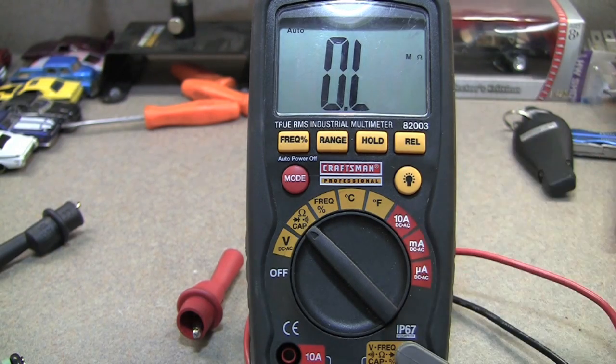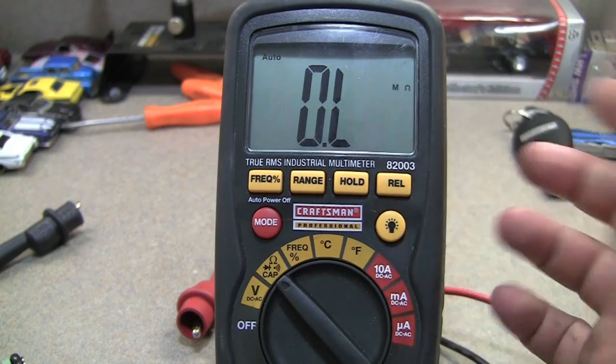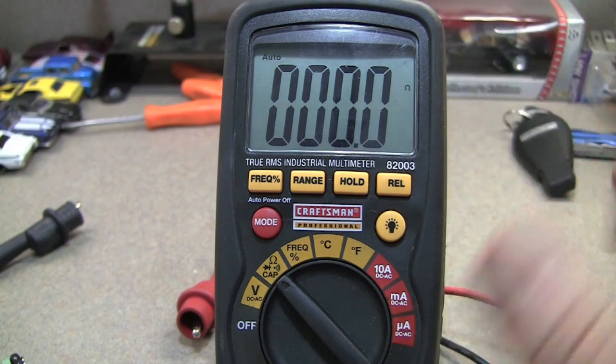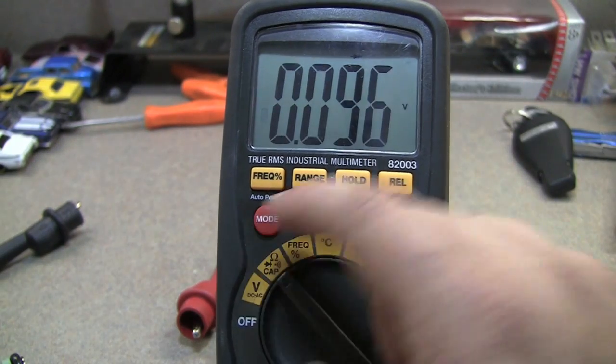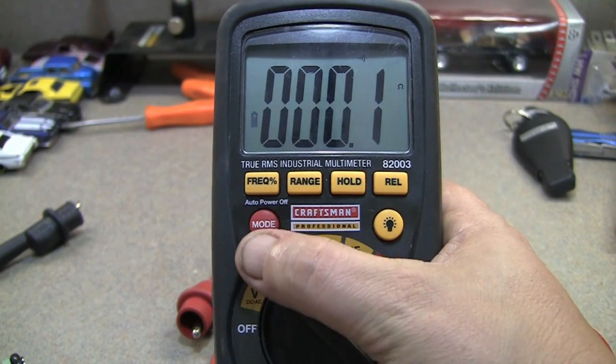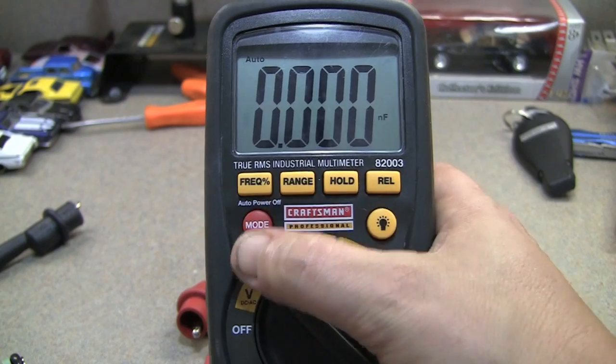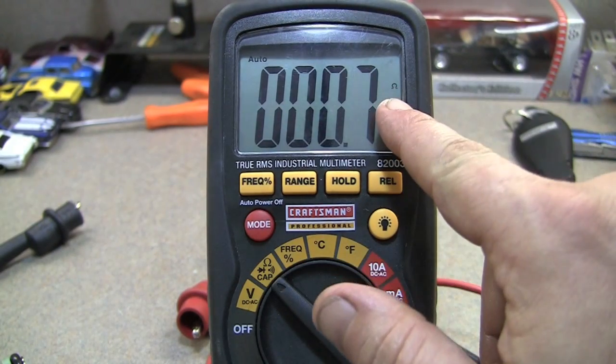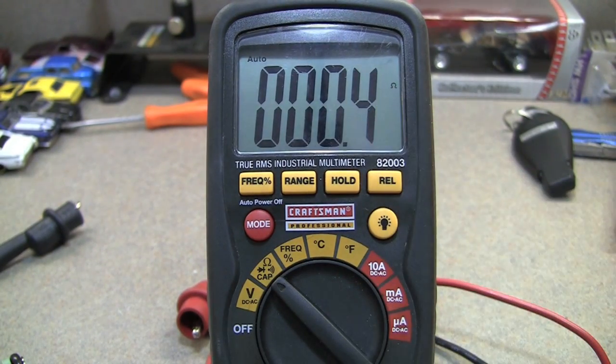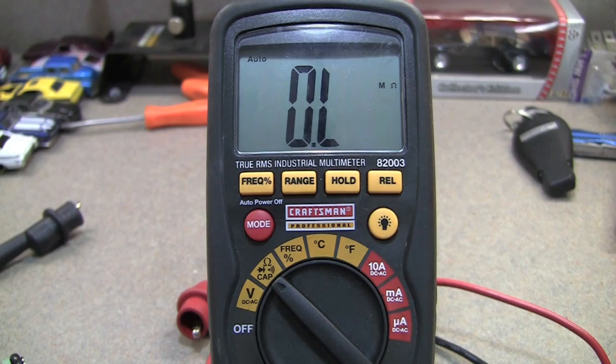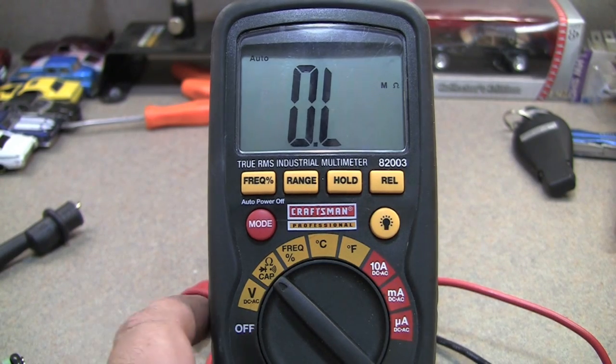So the first thing you want to do is make sure you have your meter set up on ohms. Now this one is more of an auto meter, so whatever setting I've got, it's going to do everything automatically. We've got it set up on ohms here. See the little thing? It looks like a little set of speakers almost.